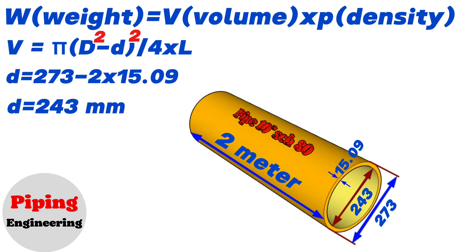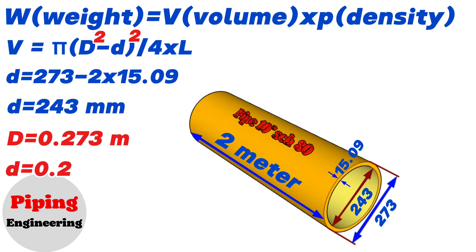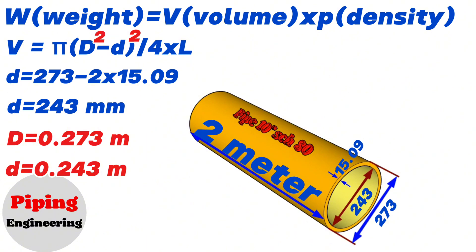These dimensions should be converted to meters, because in the density charts of ferrous metals they use meters. So the outside diameter of the 10 inch pipe in our example is 0.273 meters and the inside diameter will be 0.243 meters. We also know that the length of the pipe is 2 meters.